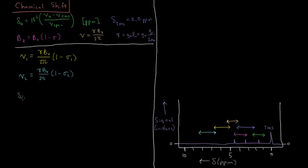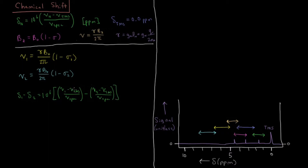We define the quantity δ1 − δ2, which equals 10^6 times [(ν1 − νTMS)/νspec − (ν2 − νTMS)/νspec]. The νTMS terms appear in both expressions and cancel out, since TMS is just a reference value telling us where the signal lies relative to the protons in TMS. This simplifies to 10^6 times (ν1 − ν2) over νspec.